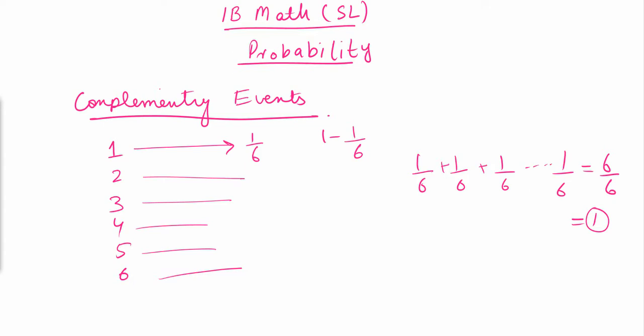The probability that an event will happen — say 1/6 — means the probability it will not happen is 1 minus 1/6. Such events are called complementary events, and such probabilities are called complementary probabilities. That's it for complementary events.